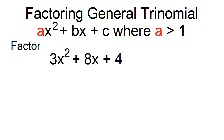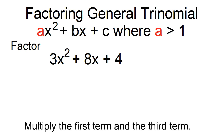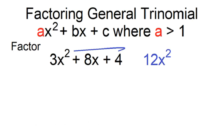Example: factor 3x² + 8x + 4. First, multiply the first term and the third term. 3x² times 4 is 12x².